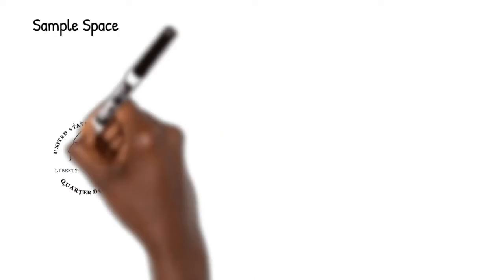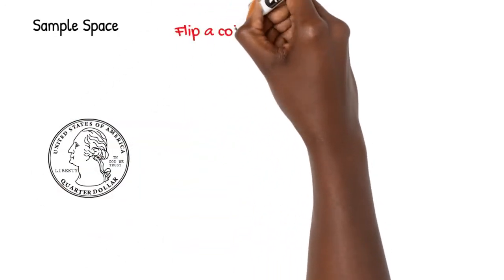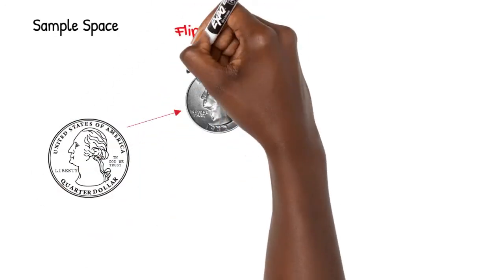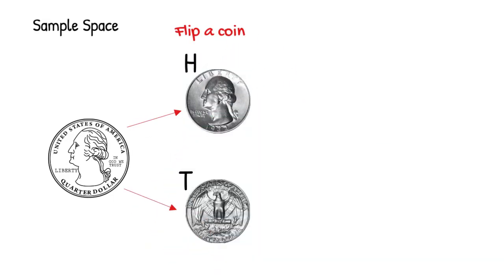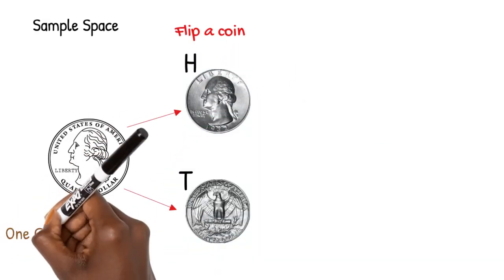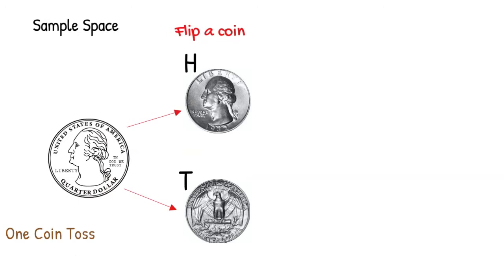In this video we'll be looking at sample space. Sample space is the collection of all possible outcomes when an event occurs. So let's say we take a coin and we flip it. It can either land on heads, which I'll call H for short, or land on tails, which I'll call T for short. So from one coin toss, the sample space is H or T.